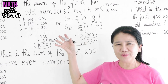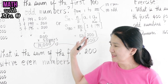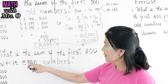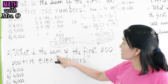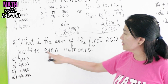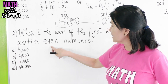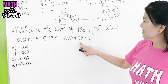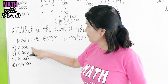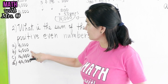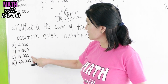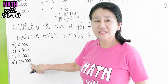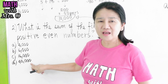So I've given you two different methods. Now let's try problem number 2: what is the sum of the first 200 positive even numbers? Letter A: 4,000. Letter B: 6,000. Letter C: 16,000. And letter D: 40,000.